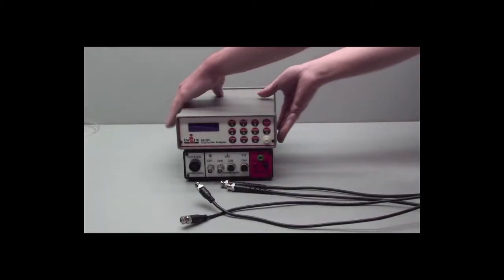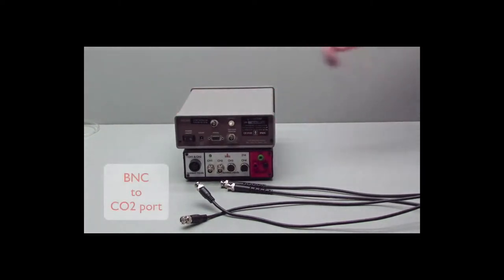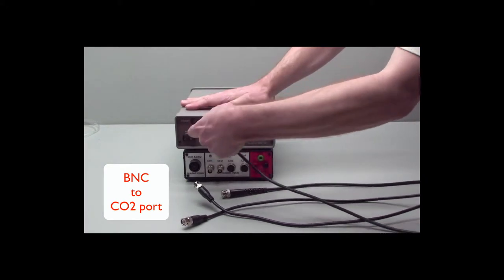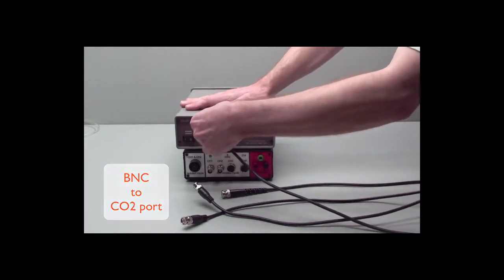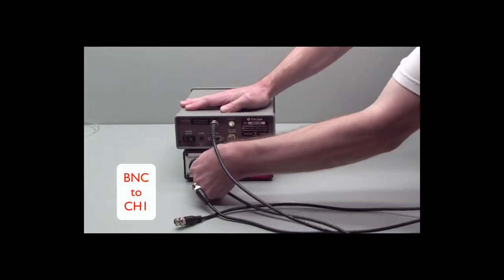To set up your components, go to the back side of the gas analyzer, and with the supplied BNC to BNC cables, take one BNC to your CO2 port, and the other end goes to channel 1 of the iWorks 214.